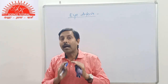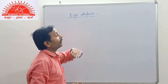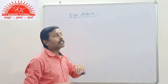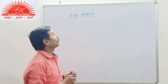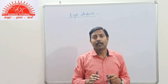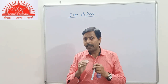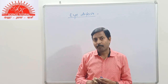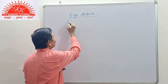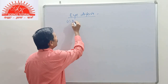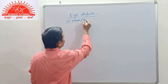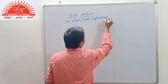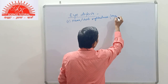Now we start eye defects — the defects from which our eyes get affected. There are two common types. The first eye defect is near-sightedness or short-sightedness, also called myopia.